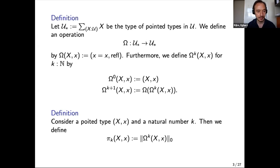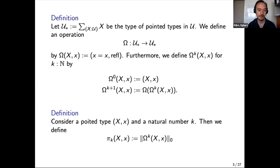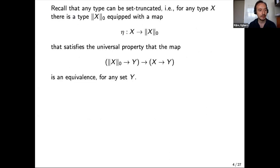With these definitions I can define the k-th homotopy group to be the set truncation of the k-th loop space of X at the base point x₀. The set truncation is important here because the k-th loop space isn't always going to be a set, and to be a group you must be a set. So we truncate, and because we're going to use truncation a lot this lecture, I'm going to recall what the set truncation is.